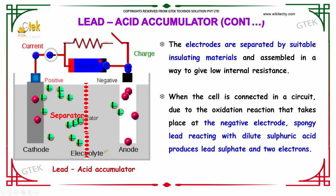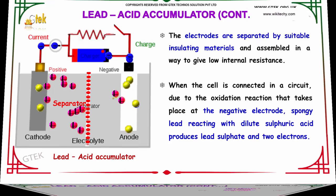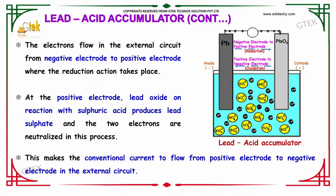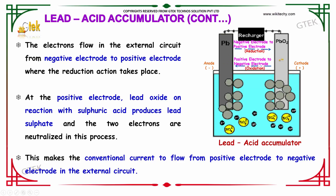When the cell is connected in a circuit, due to the oxidation process that takes place at the negative electrode, spongy lead reacts with the dilute sulfuric acid to produce lead sulfate and two electrons are neutralized in this process. The electrons flow in the external circuit from the negative to the positive electrode, where the reduction action takes place.